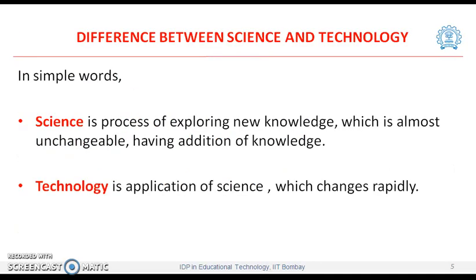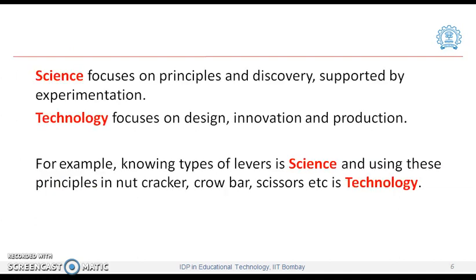Let us look at the difference between science and technology. In simple words, science is the process of exploring new knowledge, which is almost unchangeable, with addition of knowledge. Technology is the application of science, which changes rapidly. Science focuses on principles and discovery, supported by experimentation.